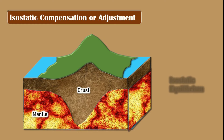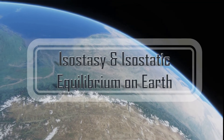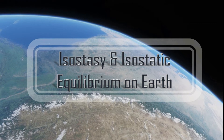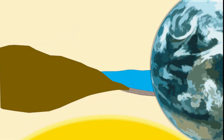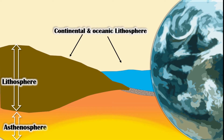Related to this is the concept of isostatic compensation — the process in which the crust slowly rises or falls to re-establish isostatic equilibrium after a geologic event changes the density or thickness of the lithosphere. Isostasy is basically the application of the principle of buoyancy on Earth. The Earth's upper two layers, i.e., the lithosphere and asthenosphere, are the major players. The lithosphere is the rigid upper layer, and it consists of continental and oceanic lithosphere. The second layer is the underlying asthenosphere, the upper mantle layer in a semi-fluid state due to extreme heat.